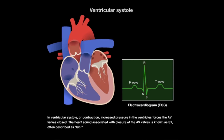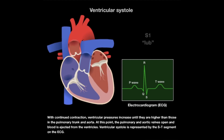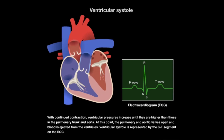In ventricular systole, or contraction, increased pressure in the ventricles forces the AV valves closed. The heart sound associated with the closure of the AV valves is known as S1, often described as LUB. With continued contraction, ventricular pressures increase until they are higher than those in the pulmonary trunk and aorta. At this point, the pulmonary and aortic valves open and blood is ejected from the ventricles. Ventricular systole is represented by the ST segment on the ECG.